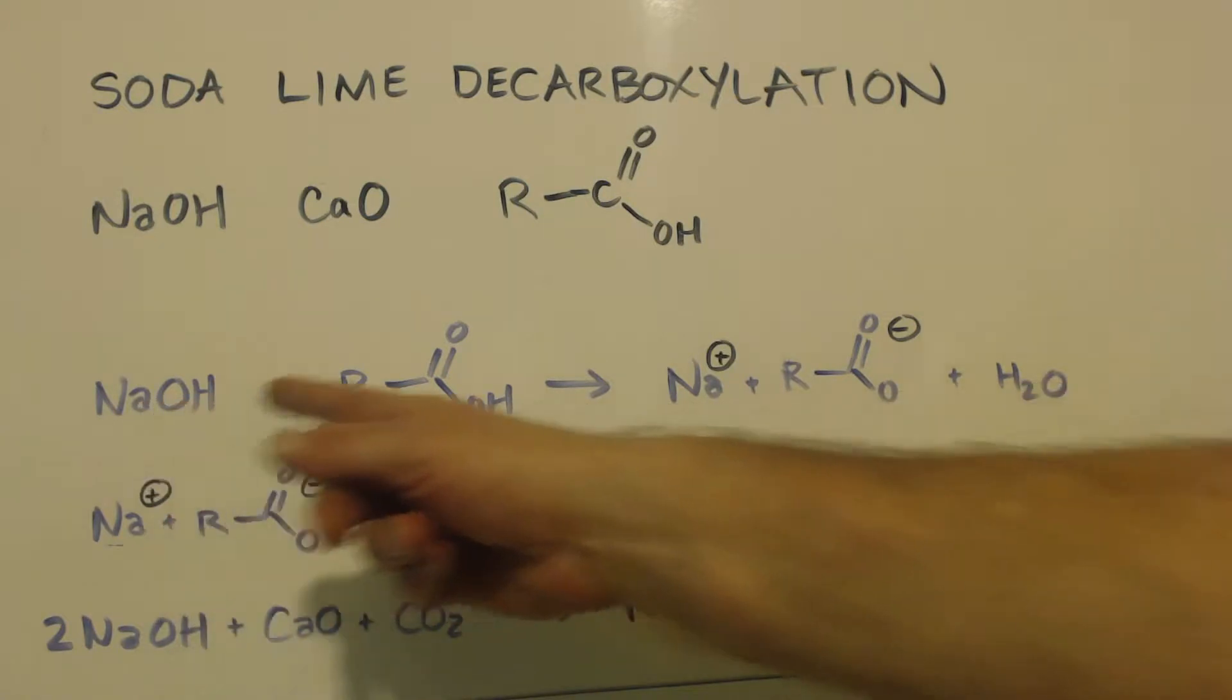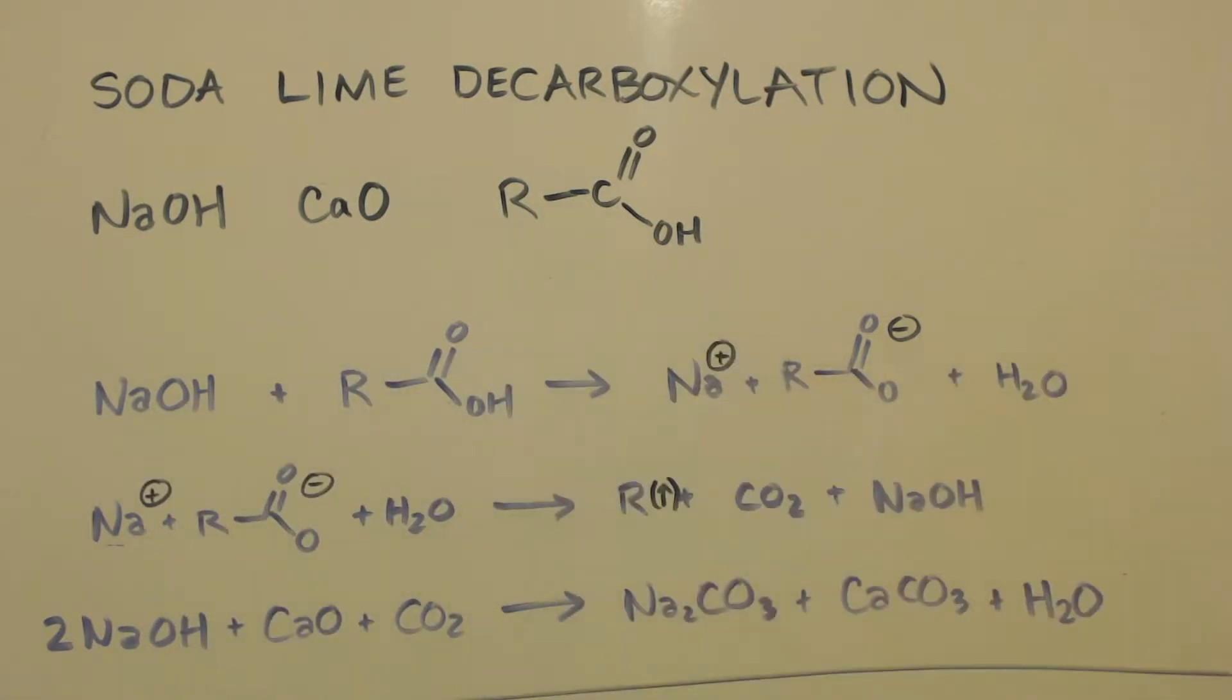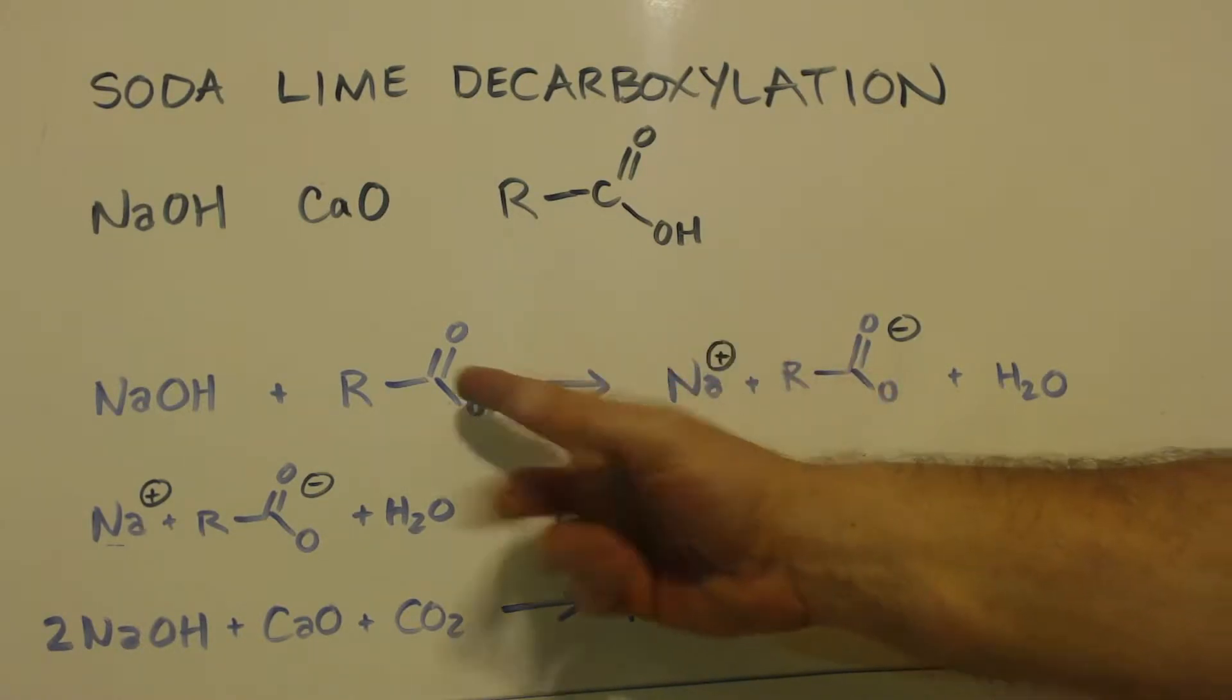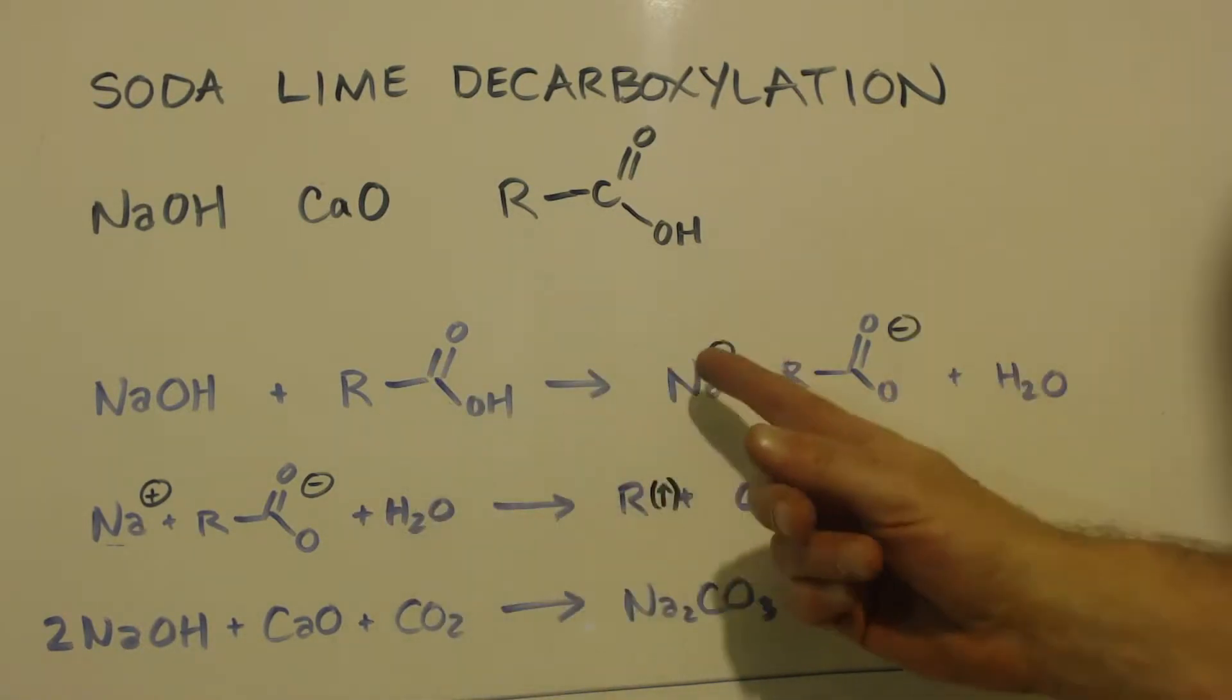I think that first of all, you've got the sodium hydroxide and your acid. Obviously, you're going to have an acid-base reaction. What do you make when you've got an acid-base? You make salt water. You're going to make a salt of that carboxyl. Let's just use acetic acid so we can have an example.